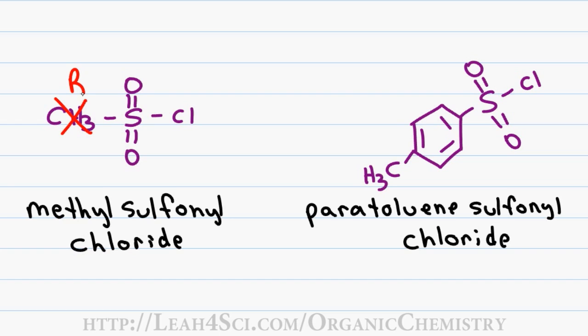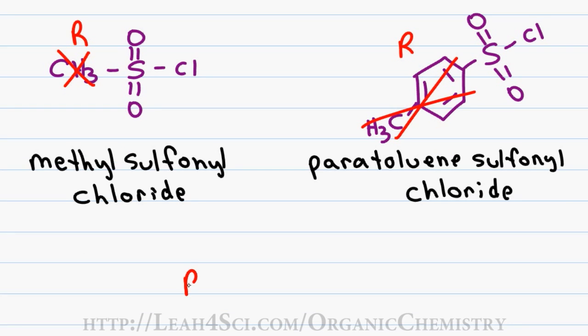We'll replace the methyl group with an R and we'll replace this entire structure also with an R. Because the key focus here is the fact that we have an R group bound to a sulfur that is double bound to two oxygen atoms and single bound to a chlorine.